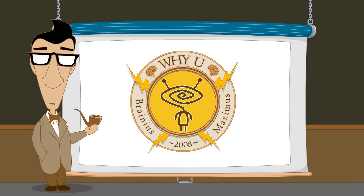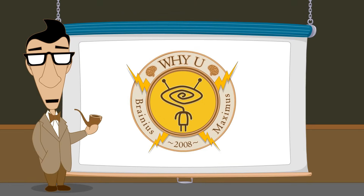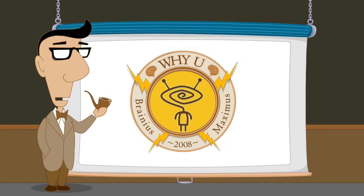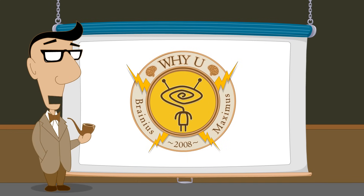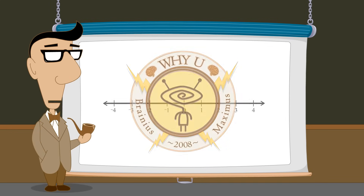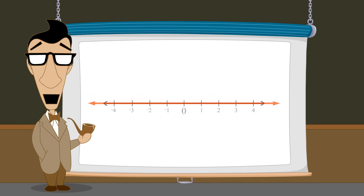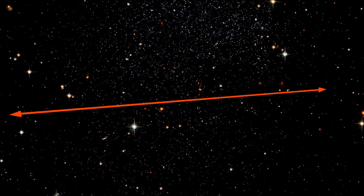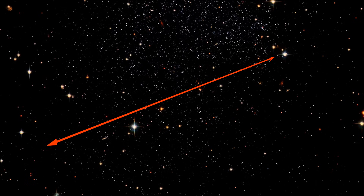Hello, I'm Professor Von Schmohawk and welcome to Why U. We have seen that sets of real numbers can be visualized using the number line. A line is a one-dimensional object and the number line represents real numbers as points in this one-dimensional space. Every real number corresponds to a single point in this space and vice versa.